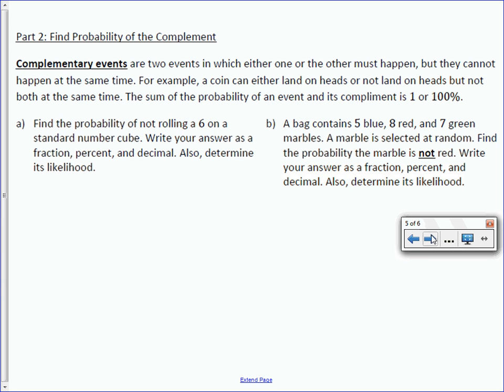Complementary events are two events in which either one or the other must happen, but they cannot happen at the same time. For example, a coin can either land on heads or not land on heads, but not at the same time. It either lands on heads or it doesn't. The sum of the probability of an event and its complement is 1 or 100%.